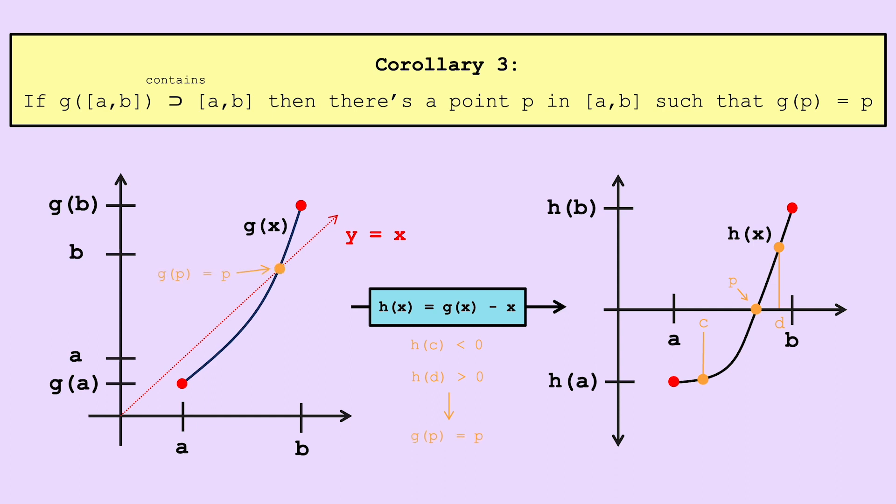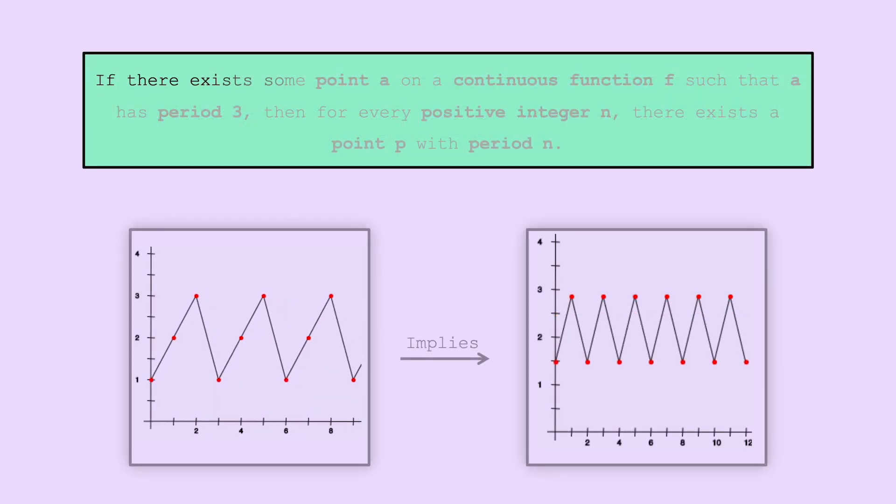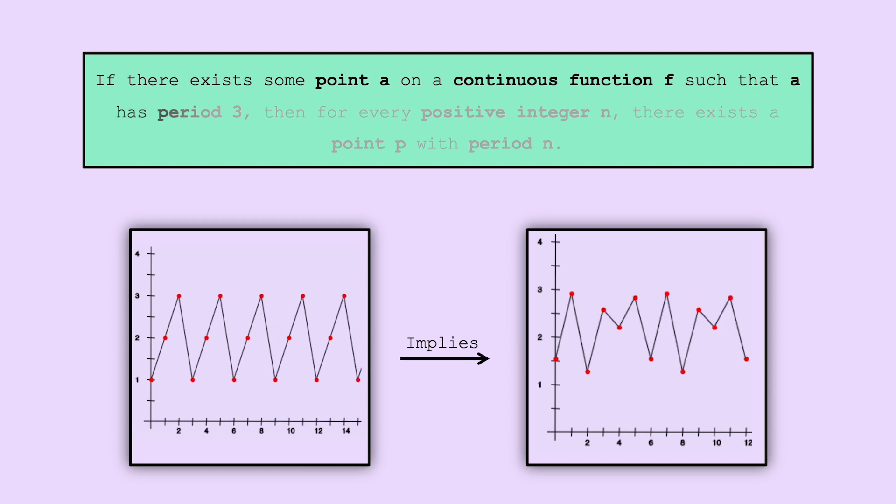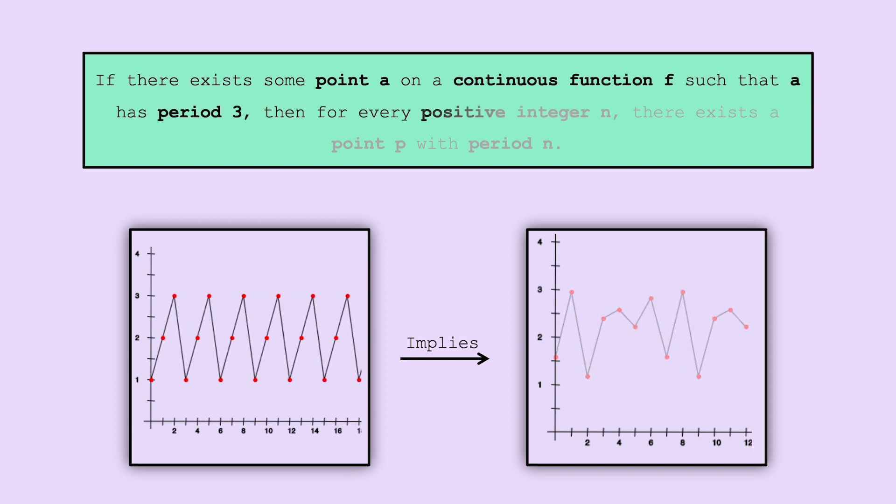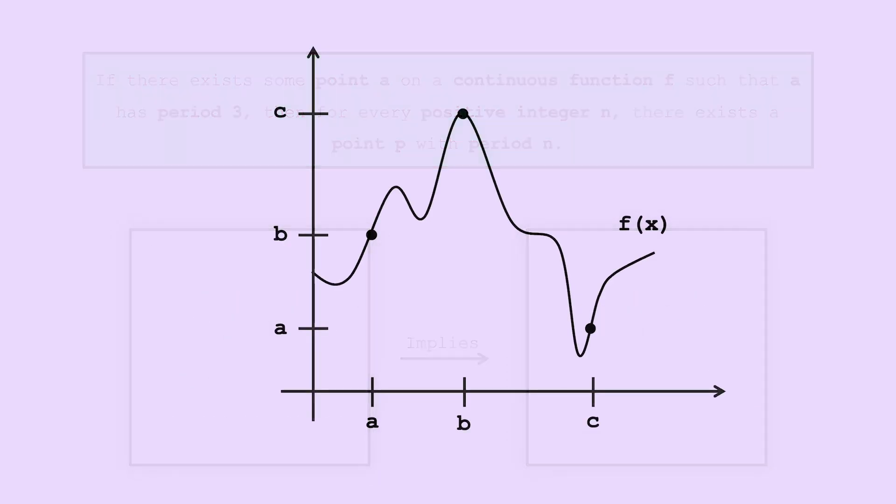Now we can return to our main proof. Remember, we are trying to prove that if there exists some point a on a continuous function f, such that a has period 3, then for every positive integer n, there exists a point on f with period n. Let's examine what happens to the intervals ab and bc under f.